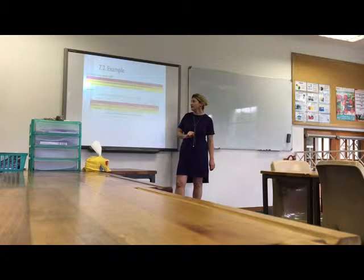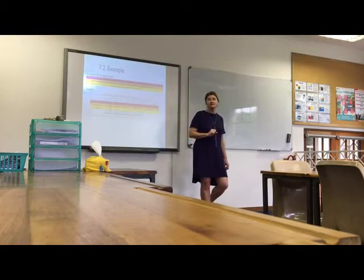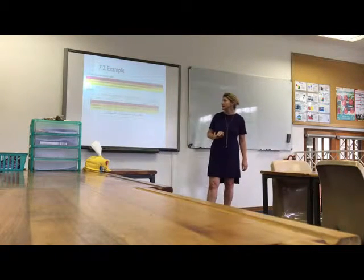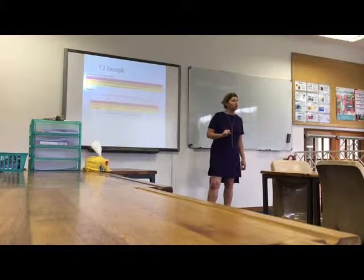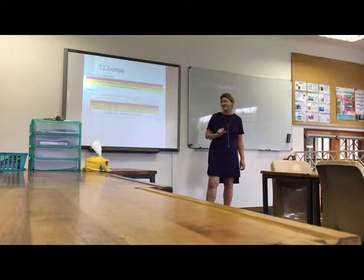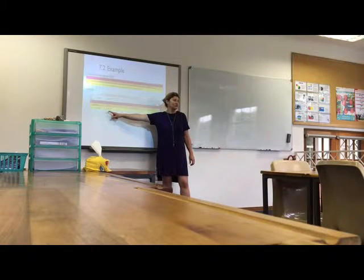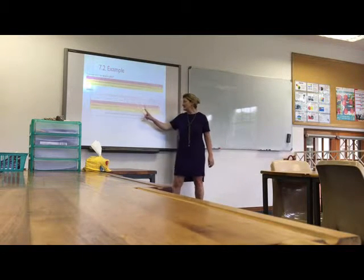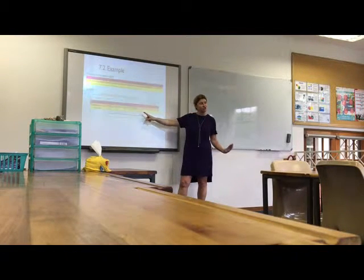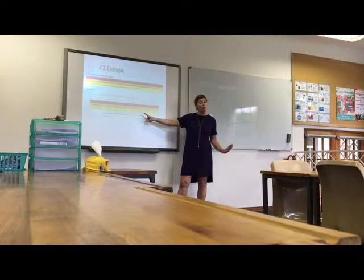Number three, receive 1,700 Rand from Z. Midland as part payment of his account. Notice here, we're going to show the 1,700 Rand in bank and in debtors. There's no VAT because he would have already been charged the VAT when he bought the goods.